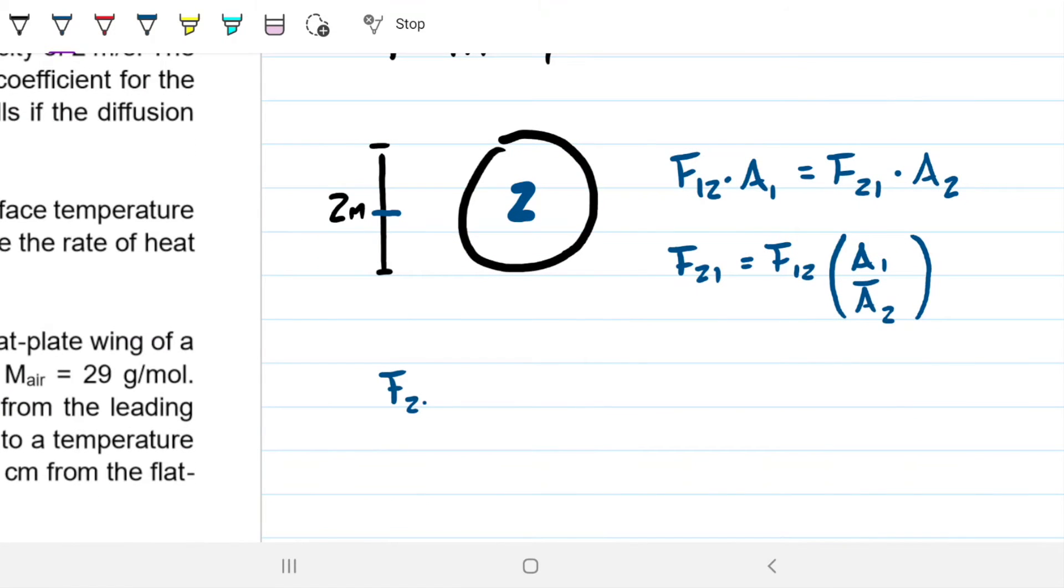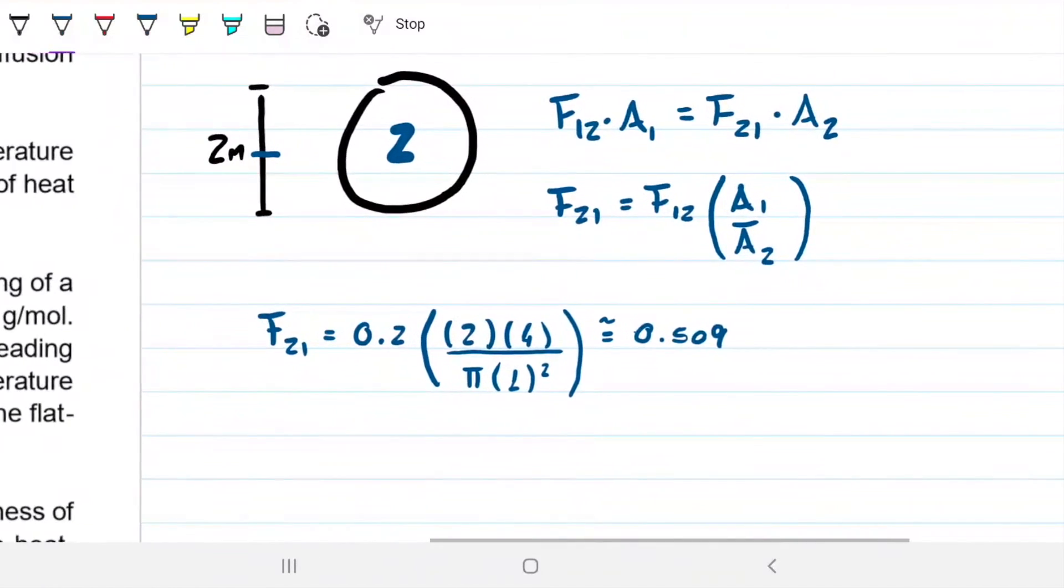It's very straightforward. So F21 is just 0.2 of the ratio between the two things. It's 2 meters times 4 meters. And over here, we just have pi r squared and r is 1. So that's it. And this is going to give us the view factor of about 0.509. That is about 50% of the energy leaving the disk is actually reaching the rectangle on top there.